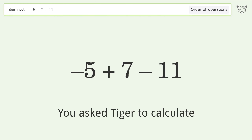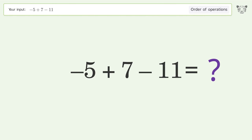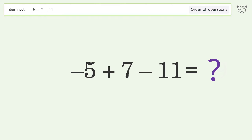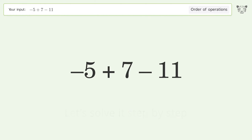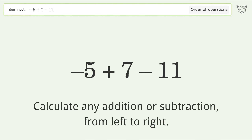You asked Tiger to calculate this. It deals with the order of operations. The final result is negative 9. Let's solve it step by step.